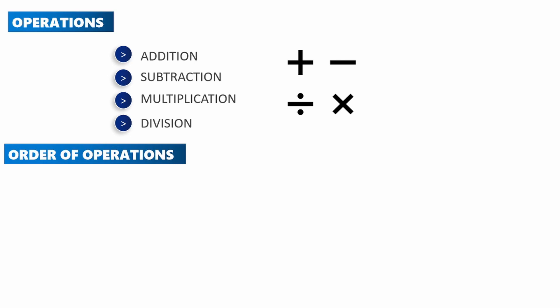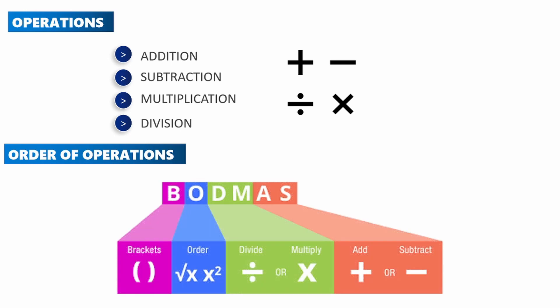Let's look at the order of operations. This is the order in which you evaluate questions, known as BODMAS: Brackets, Of, Division, Multiplication, Addition, and Subtraction. Whenever given a question, begin with what's in the brackets, then the square roots and powers, then multiplication or division, and finally addition or subtraction.